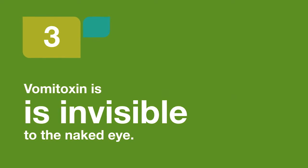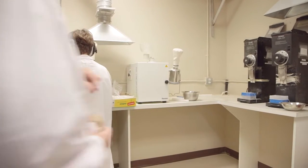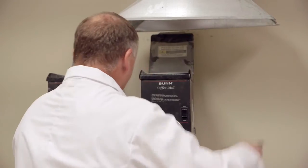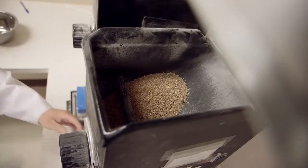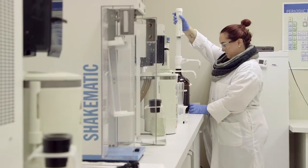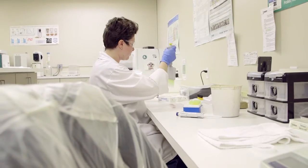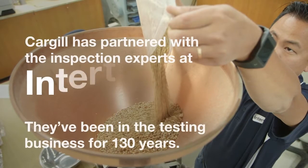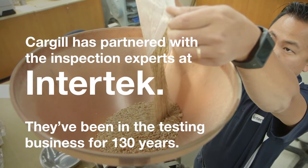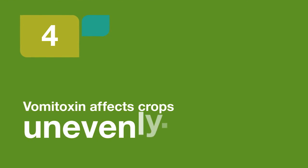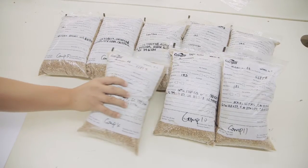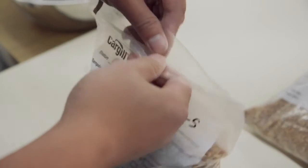Number three: vomitoxin is invisible to the naked eye. When Cargill sees signs of fusarium growth in a sample of wheat, we send it to a lab to get tested. Lab technicians grind it down, mix it with water, and then use agents to determine the presence and amount of vomitoxin in the sample.